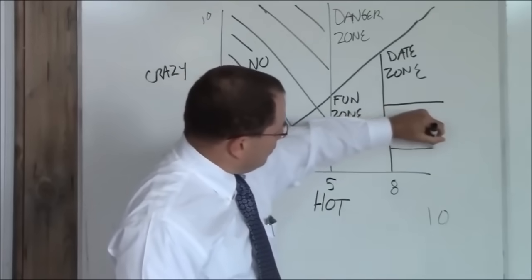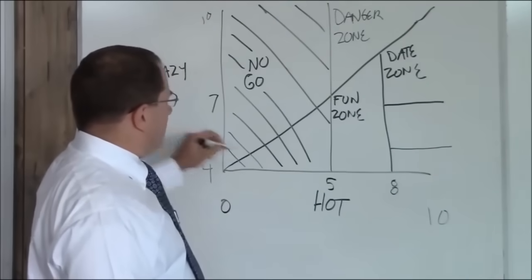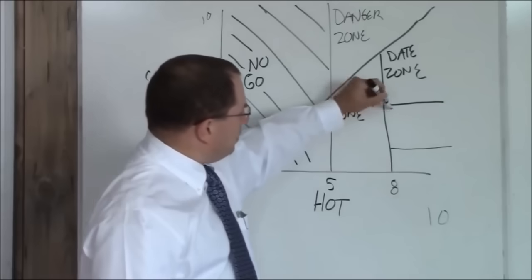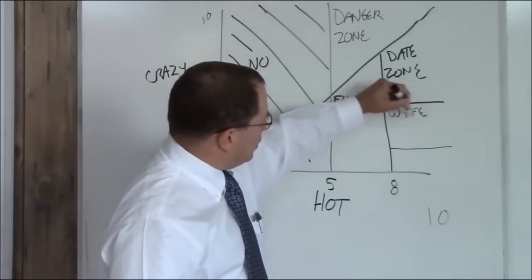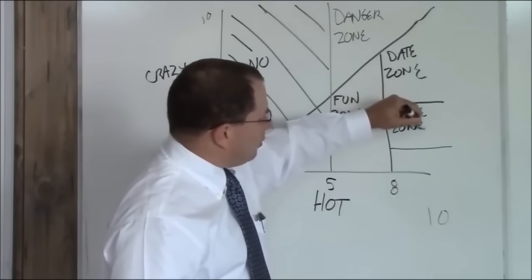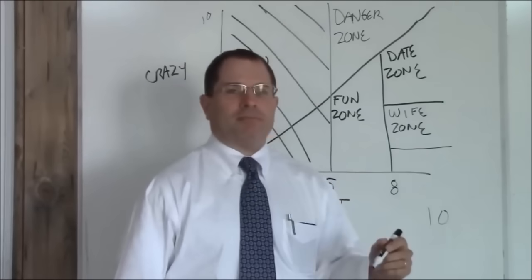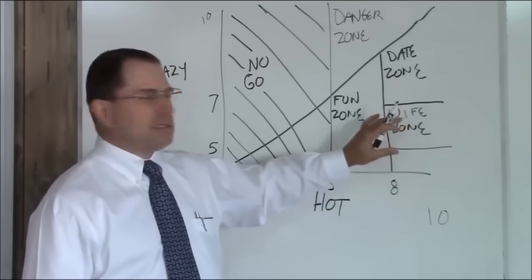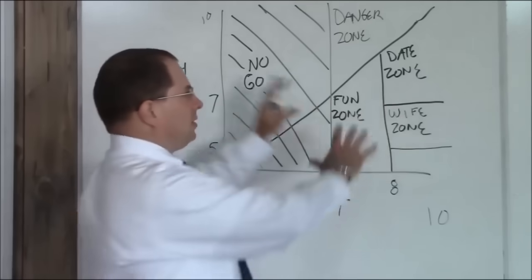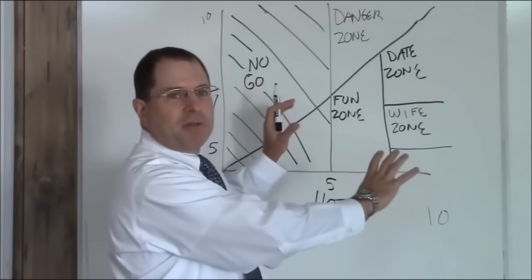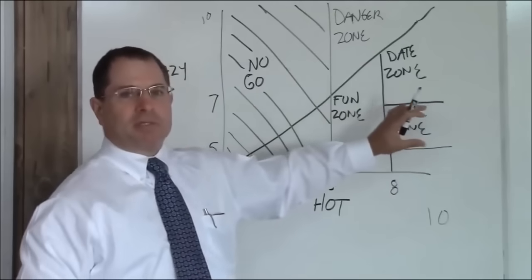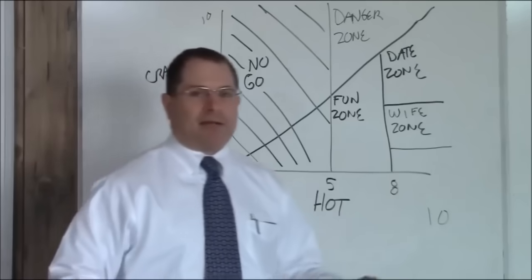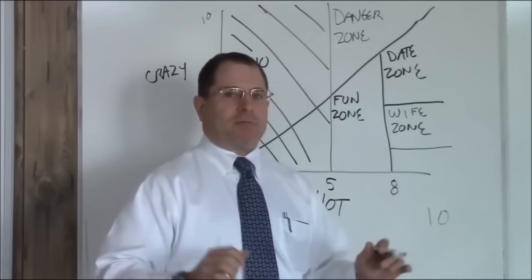Now, above an eight hot and between about a seven and a five crazy, this is your wife zone. When you meet this girl, you should consider a long-term relationship. This zone is not scaled to size. This is a representation, not an actual pie chart showing you how many of these people are out there. This is simply a representation of what you're after. You want to be five to seven crazy, above an eight hot. That's your wife zone.